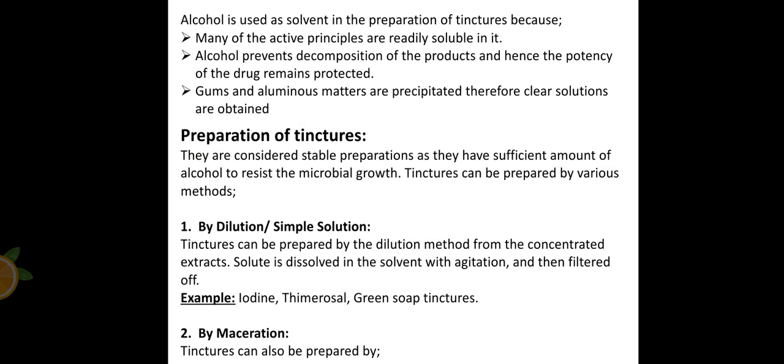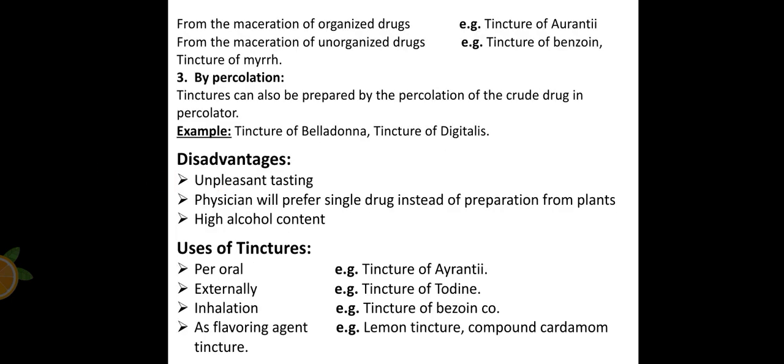Tinctures are prepared by the following methods. The first method is by dilution, or simple solution. In this method, we dilute the concentrated extracts by dissolving the concentrated solute in a solvent, then we stir and filter it. Examples include tincture of iodine, tincture of thimerosal, and green soap tincture.